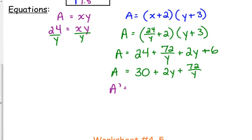So let's take the derivative. The derivative of 30 is 0. The derivative of 2y would be 2. And the derivative of 72 over y would be negative 72 over y squared. If we rewrite that as 72y to the negative 1, power rule, bring down the negative, subtract 1, so that puts y squared in the denominator.